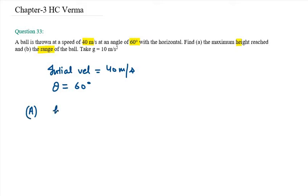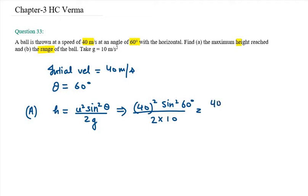Maximum height ka formula hai u square sin square theta over 2g. u square is 40 square sin square 60 degree over 2 into 10. So 40 square is 1600 and sin square 60 is under root 3 over 2. Ab isko reduce karu, you will get your answer as 60 meter.